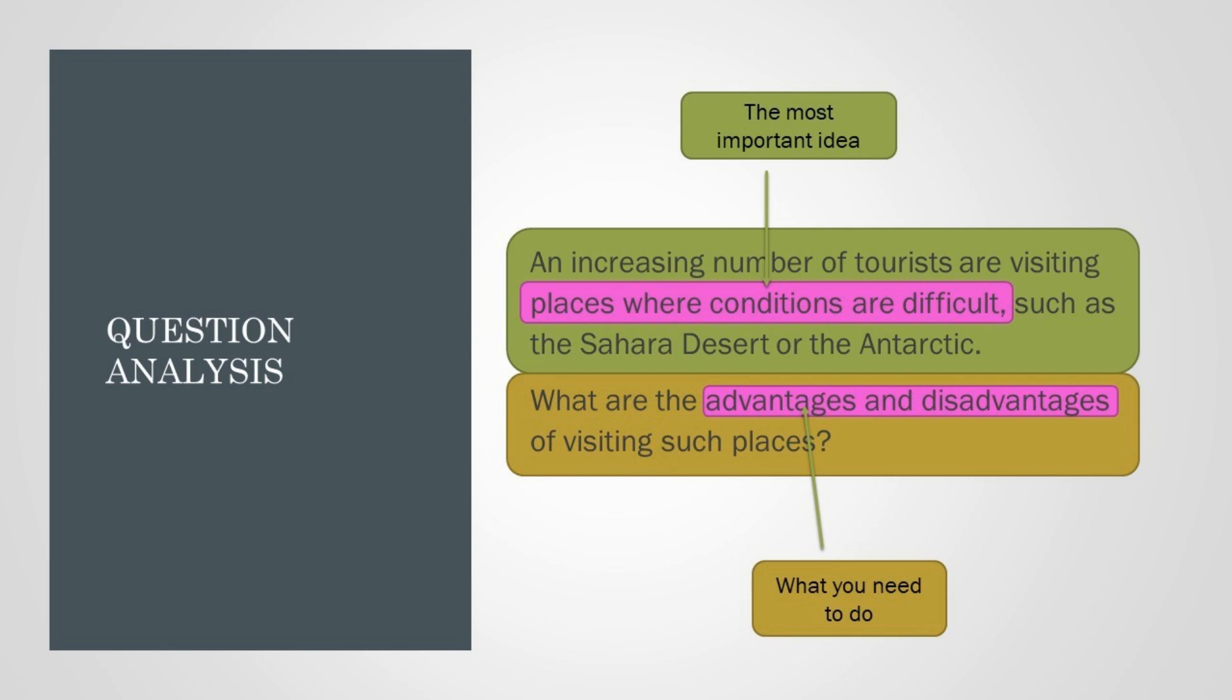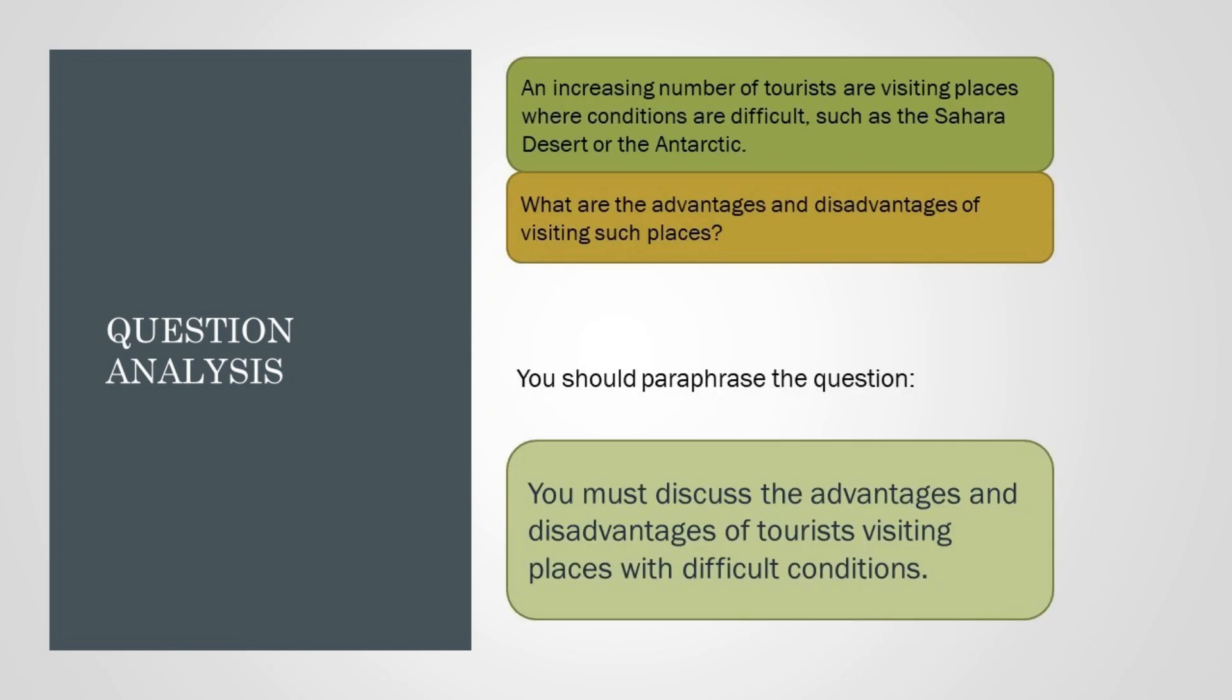We can see here the two most important parts of the question. In this statement, you need to look for the main idea, which in this case is that people are visiting these extreme places. In the task, you should look for the type of question and what that requires you to do. In this case, you're going to discuss advantages and disadvantages.